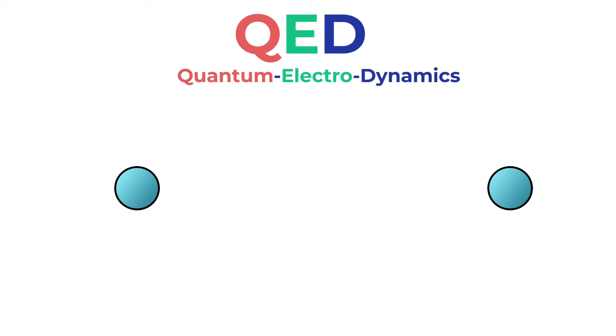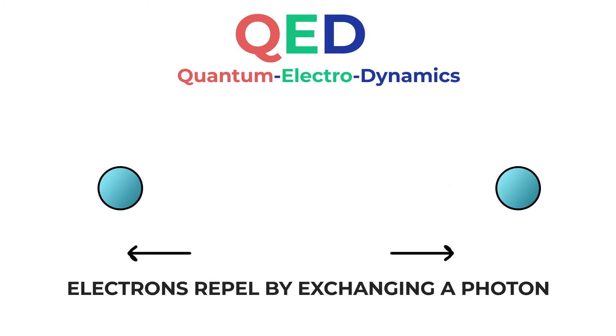And so, that same idea was applied to electrons. Under this new theory, QED, electrons were thought to repel by firing virtual photons at each other. However, the math behind QED broke down because it was just too difficult.